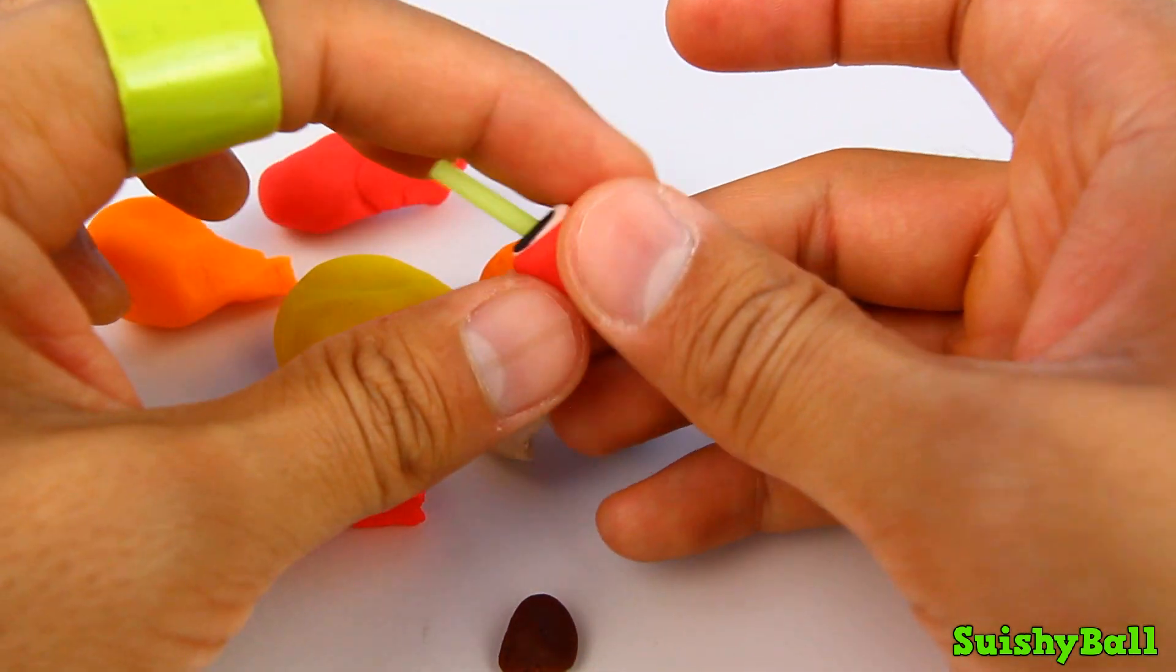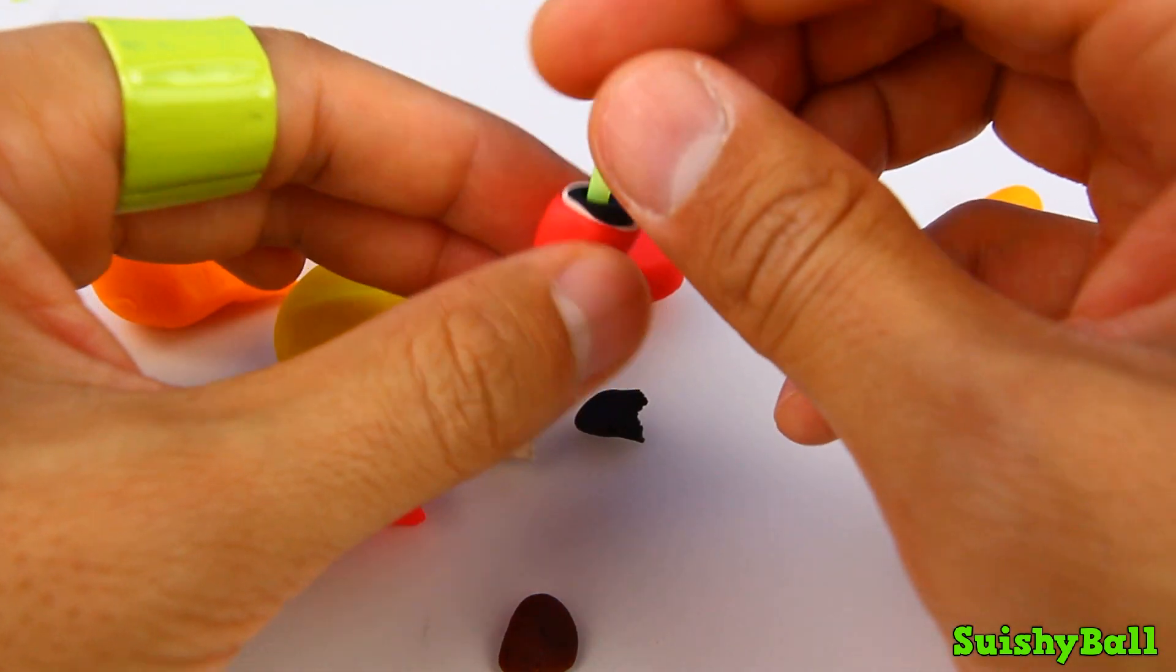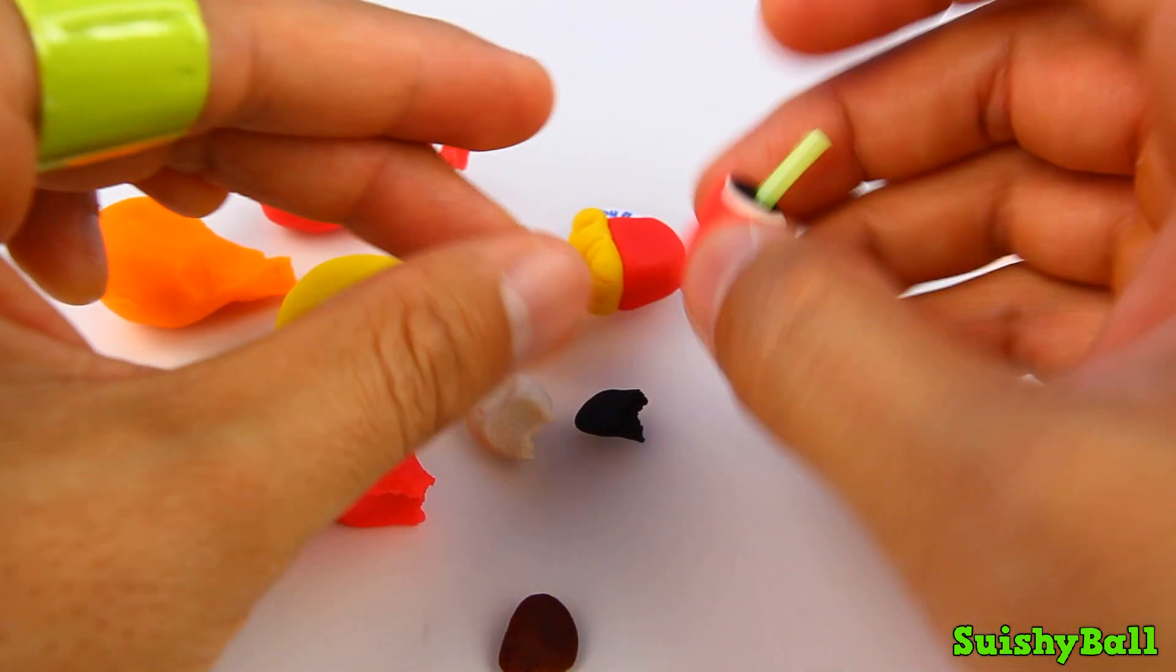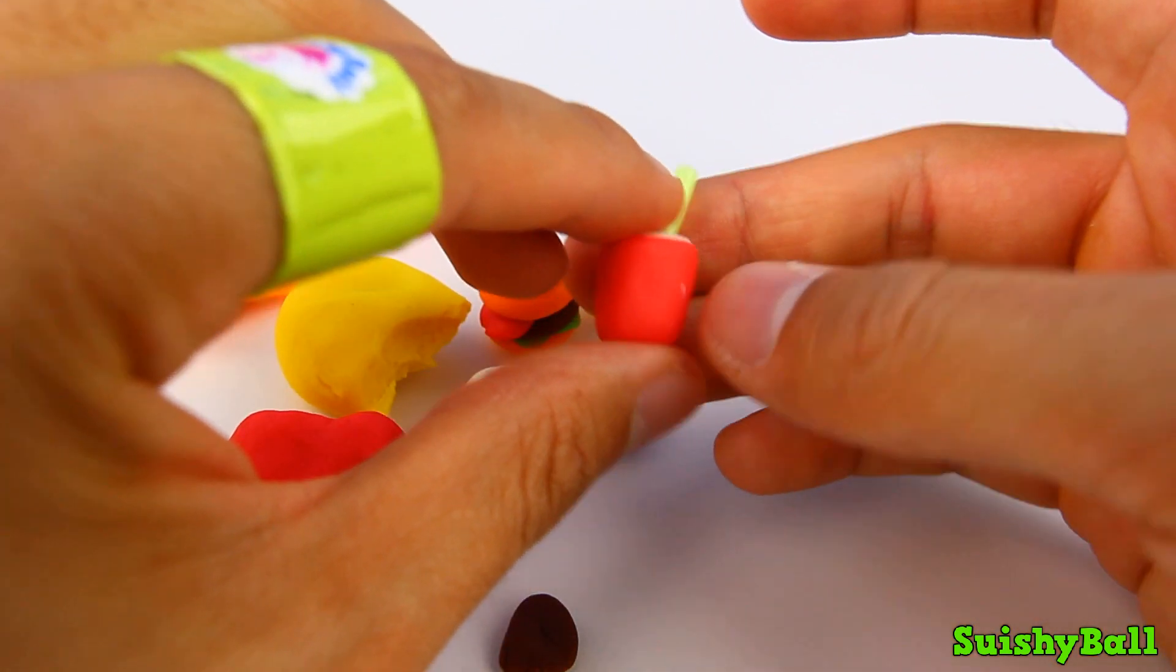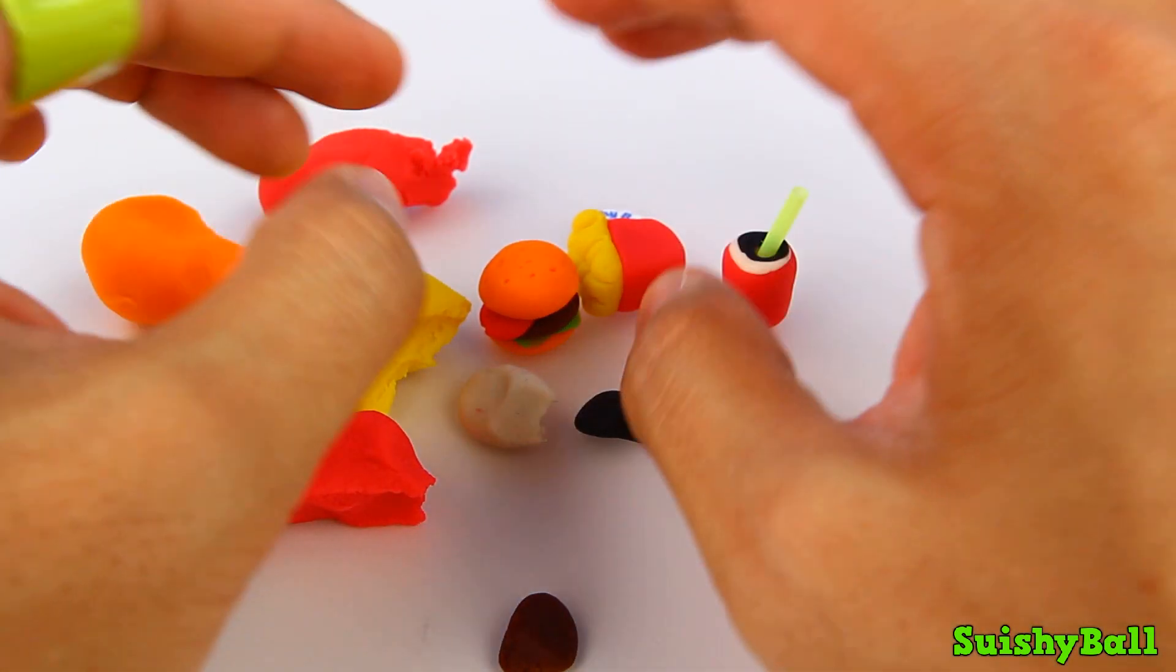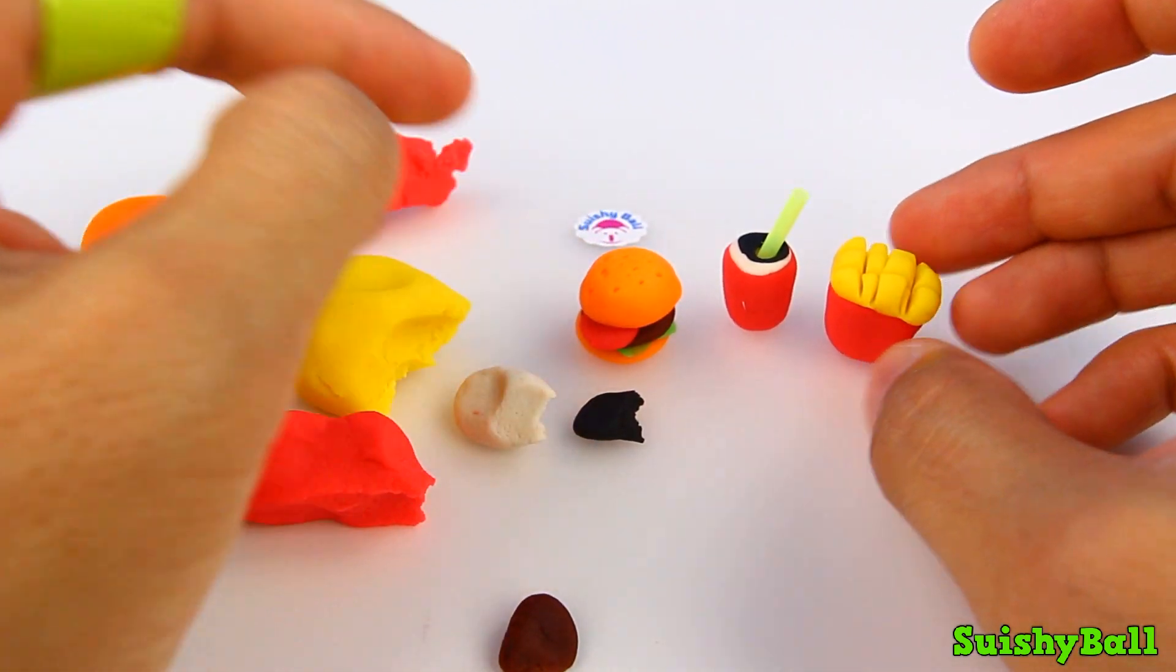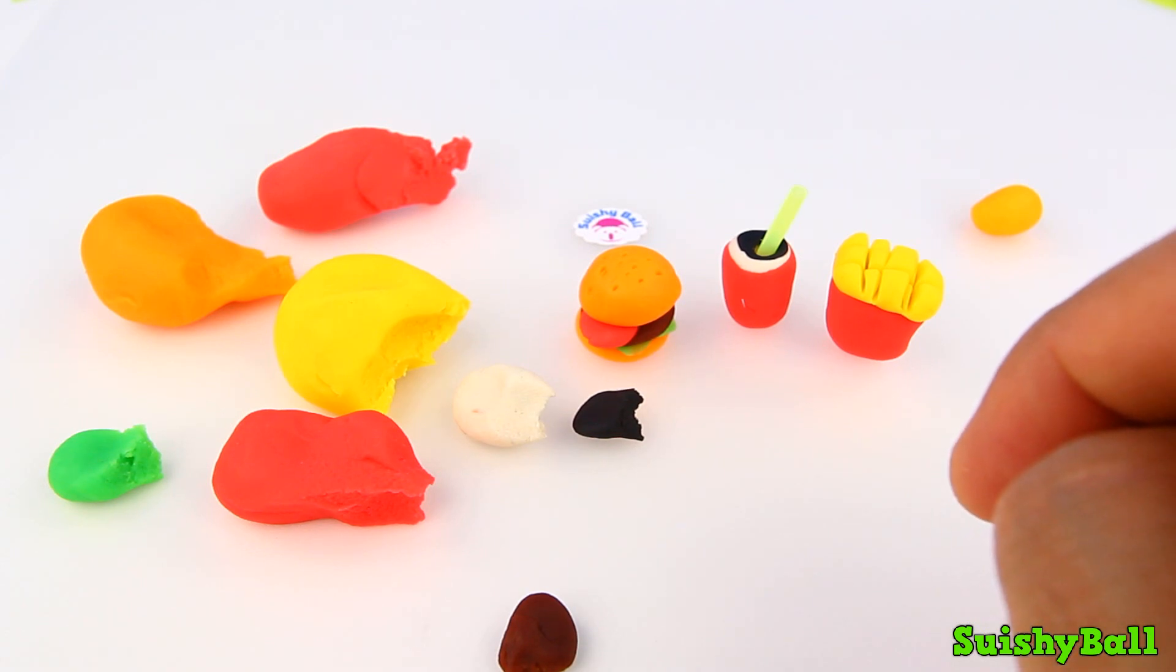That's actually kind of a big straw, now I'm going to have to cut it down a little so that it's the right size. Then I just have to make it a little flat so that it'll stand by itself. And there's the fry, burger, and drink meal set.